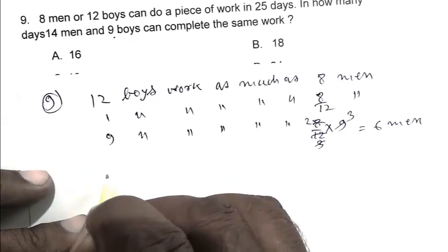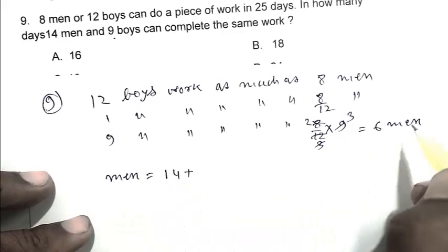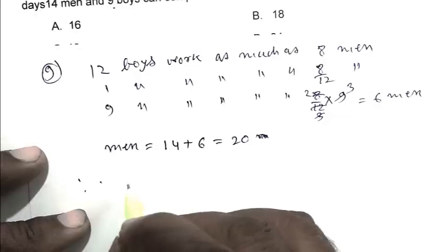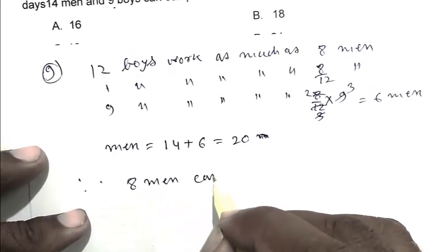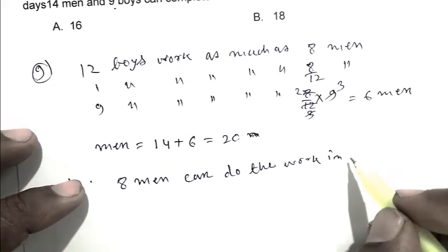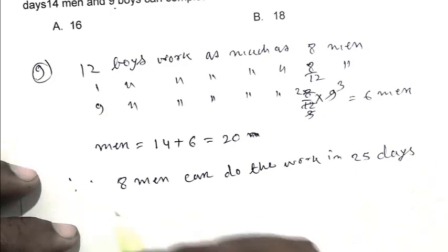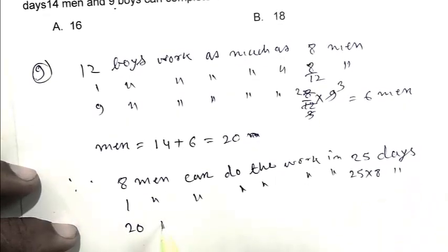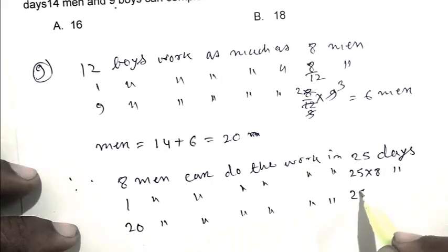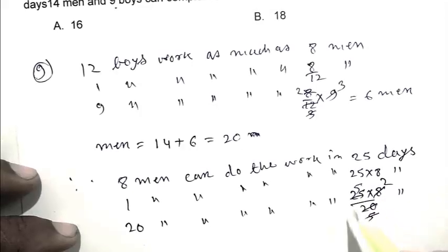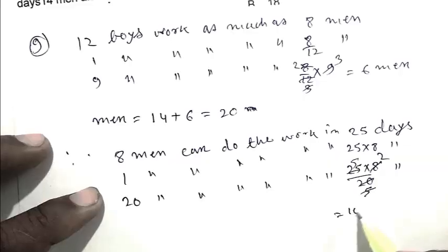We replace 9 boys by 6 men. Total number of men is 14 plus 6, which equals 20 men. 8 men can do the work in 25 days. 1 man can do the work in 25 times 8 days. 20 men can do the work in 25 times 8 by 20, which equals 10 days. C is the right answer.